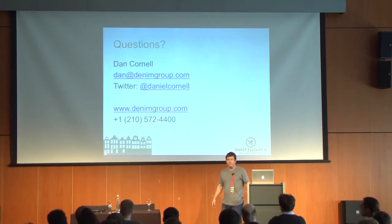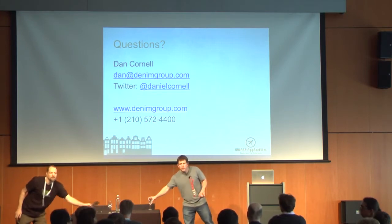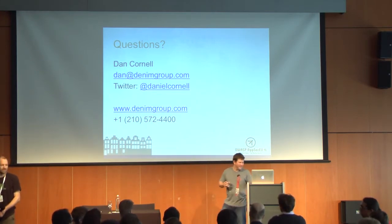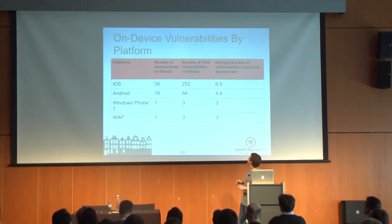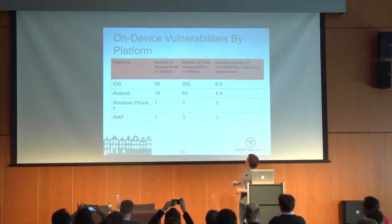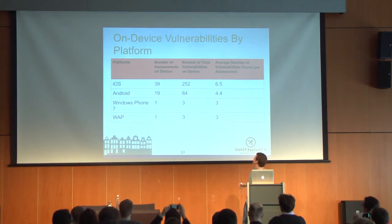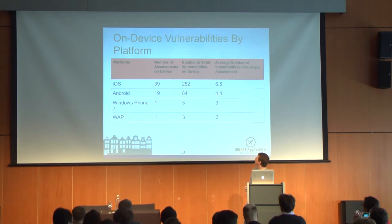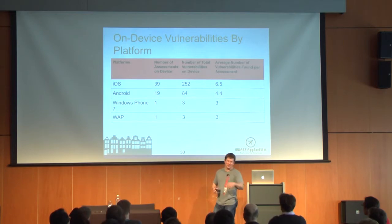Q&A: Someone asks about the platform comparison slide. iOS had 6.5 vulnerabilities per assessment versus WAP which had only 3. So you heard it here first — WAP is twice as secure as iOS, right? That's why everybody should take a picture of that slide.